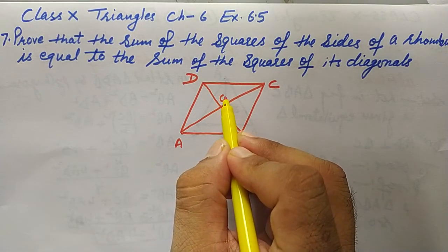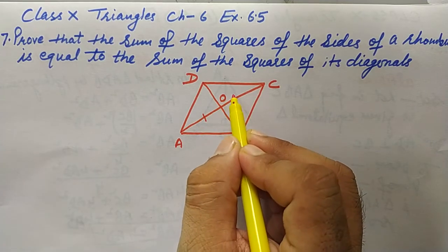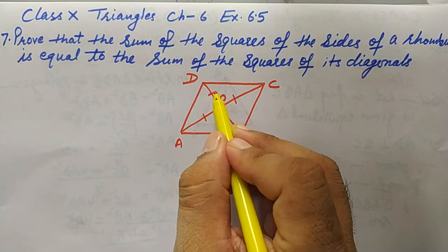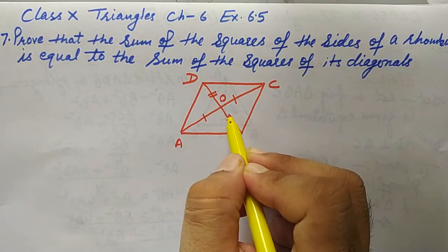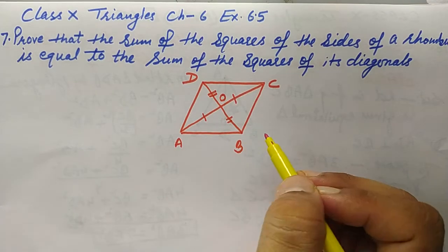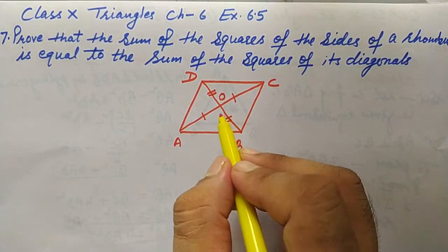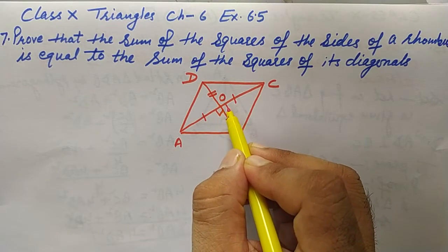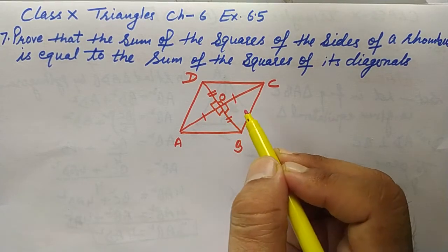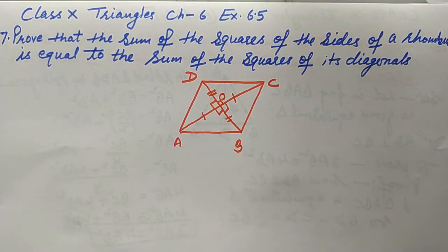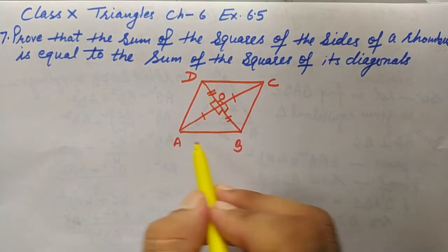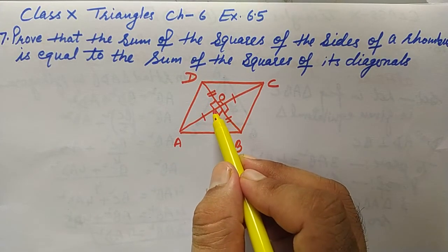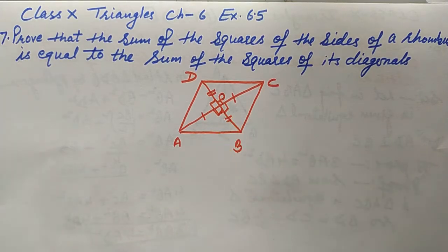The diagonals intersect and bisect at point O. This means AO = OC = half of AC, and DO = BO = half of BD. Also, the diagonals bisect at 90 degrees. These are the properties of a rhombus: all sides are equal, and diagonals bisect each other at right angles.